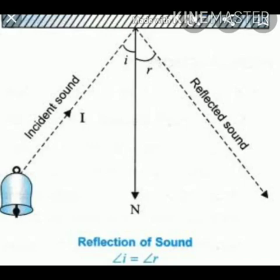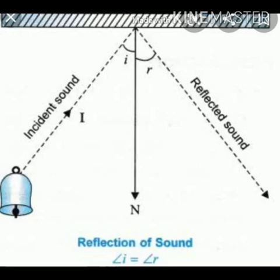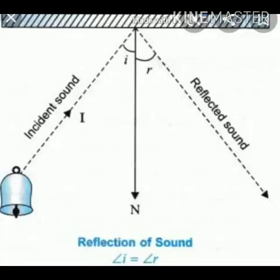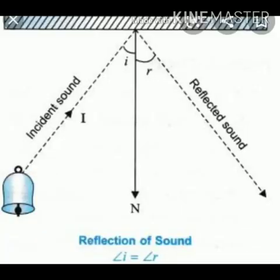When sound waves fall on a surface, they bounce back from the surface. This phenomenon is called reflection of sound. The wave that travels toward the reflective surface is called incident sound ray, and the sound wave that bounces back from the reflective surface is called reflected sound. This phenomenon of sound is utilized in devices like loudspeakers, sound boards, and hearing aids.